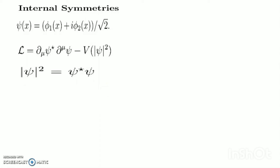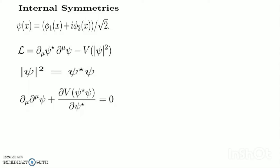To find the equation of motion we could expand psi in terms of phi_1 and phi_2 and work as before. However, it is easier to treat psi and psi* as independent variables and vary the action with respect to both of them. For example, varying with respect to psi* leads to the equation of motion: del_mu del^mu psi plus del V(psi*, psi) / del psi* equals zero.